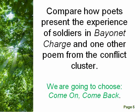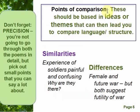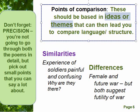The example we looked at was: 'Compare how the poets present the experience of soldiers' — that being the key idea — in Bayonet Charge and in one other poem from the conflict cluster, and we decided to go for Come On Come Back. The first thing you've got to do is come up with your ideas, your points of comparison. We think the best thing to do is focus on ideas or themes that are similar or different, and then that will lead you towards writing about language and structure.